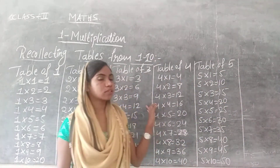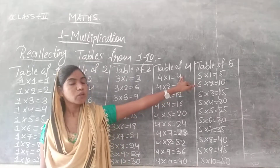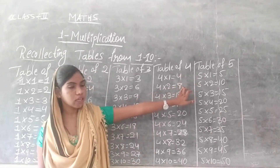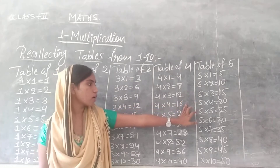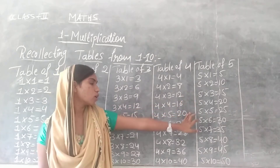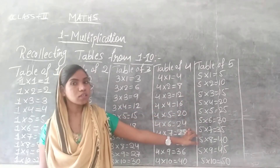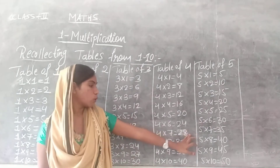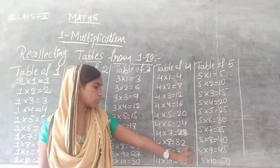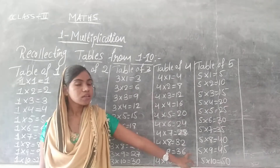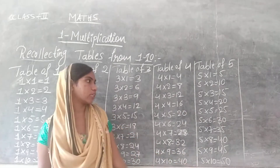Now read the table of 4. 4 1s are 4, 4 2s are 8, 4 3s are 12, 4 4s are 16, 4 5s are 20, 4 6s are 24, 4 7s are 28, 4 8s are 32, 4 9s are 36, 4 10s are 40.